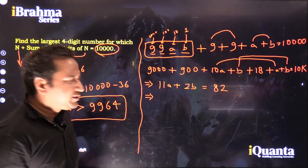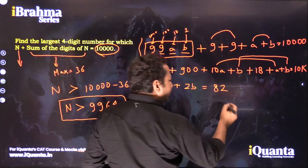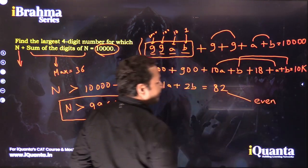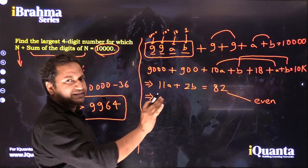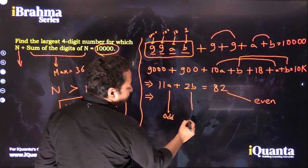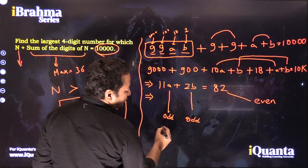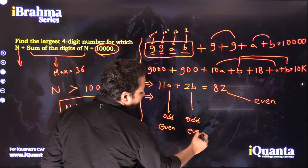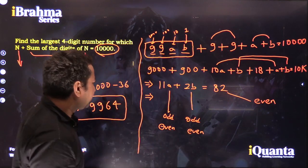If you look at this value, this is actually an even value. If the sum is even, both these numbers should be either odd or even. They both should be either odd or both should be even.